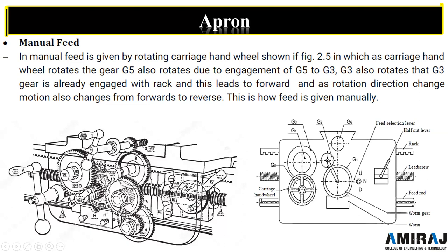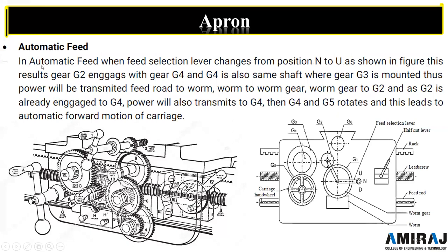If we rotate the carriage hand wheel in the clockwise direction, this will also rotate in the clockwise direction and the rack will also move in that direction. If we rotate in the anticlockwise direction, it will rotate anticlockwise. So this is how the feed is given manually.